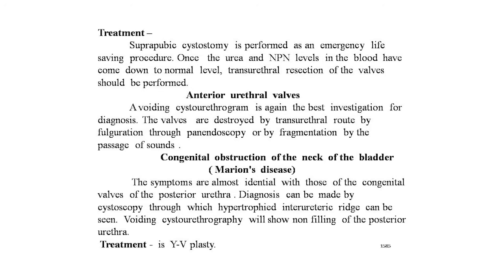The next congenital abnormality is the anterior urethral valve. In a few rare instances, anterior urethral valves have been reported. Voiding cystourethrogram is again the best investigation for diagnosis. The valves are destroyed by transurethral fulguration through panendoscopy or by fragmentation by the passage of sounds.